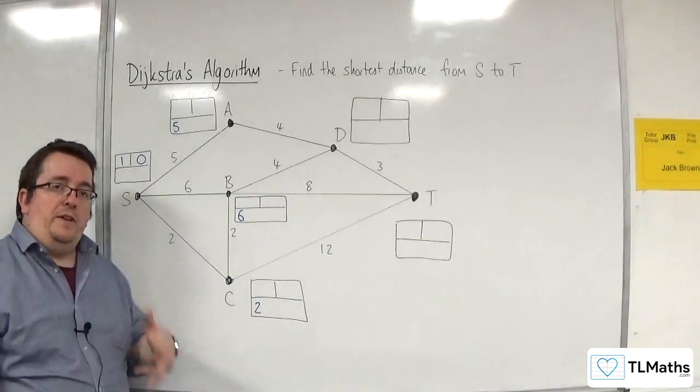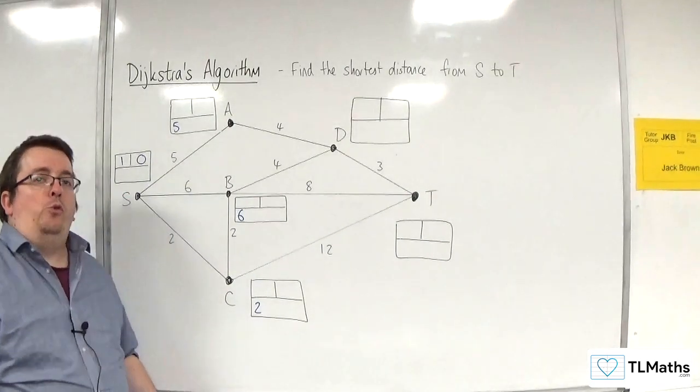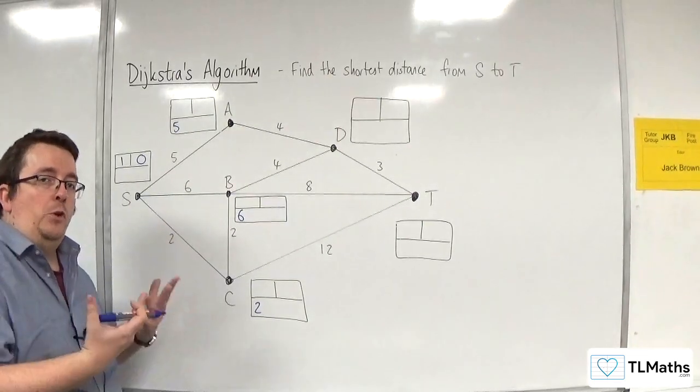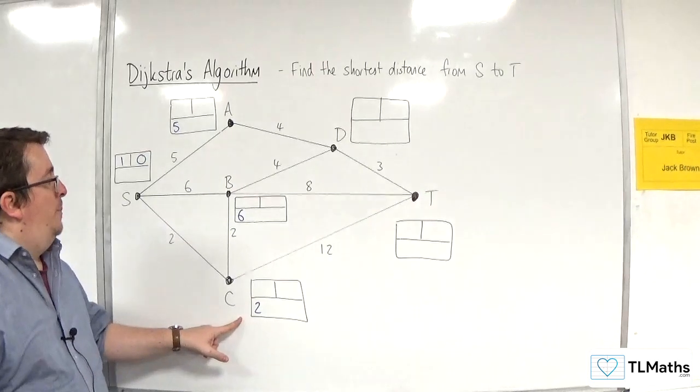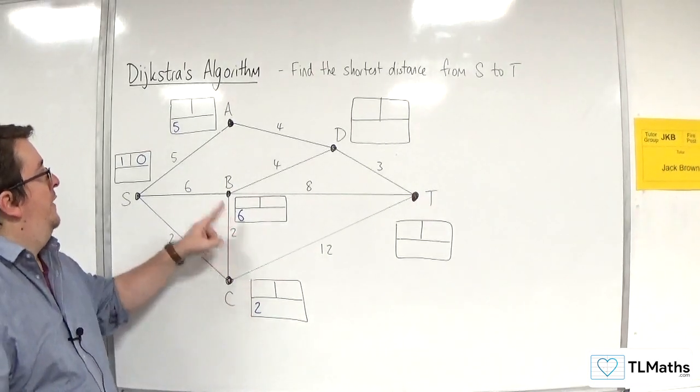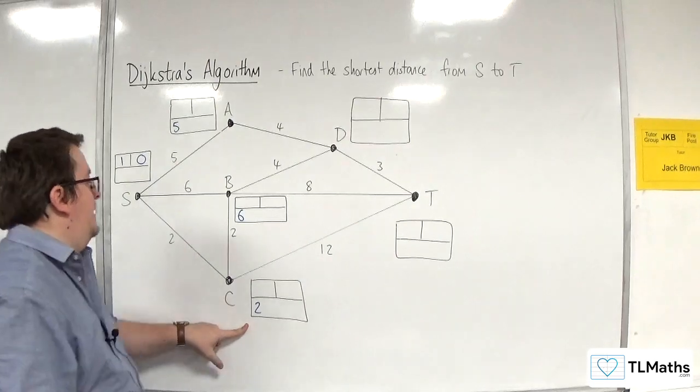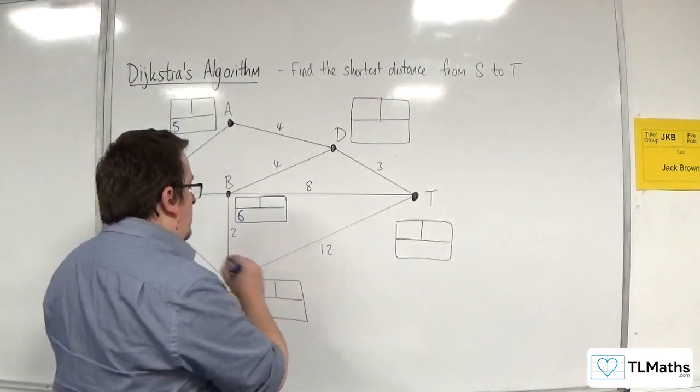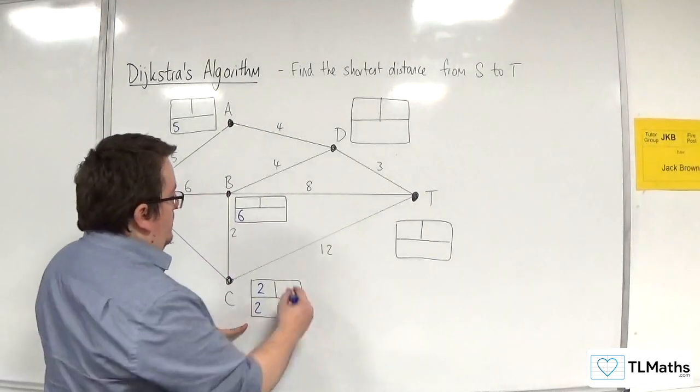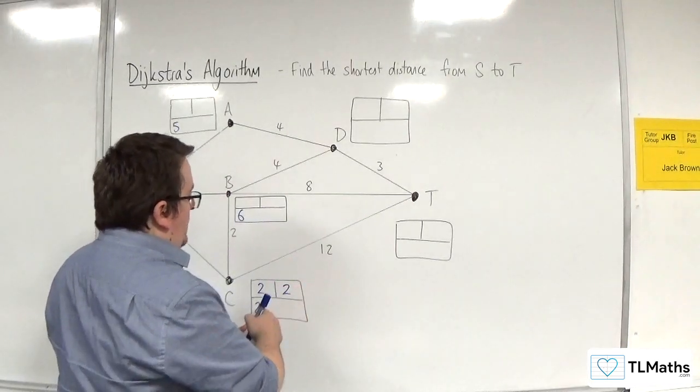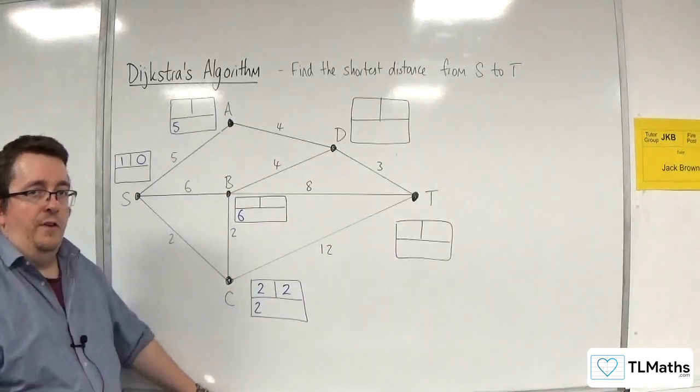So once we've got that, the next vertex that we consider is the one with the smallest working value. So C gets picked next because we've got two, six, and five. So two is the smallest. So C gets picked next and gets the order of labeling as two and the final value as two. That's the working value going into the final value box.